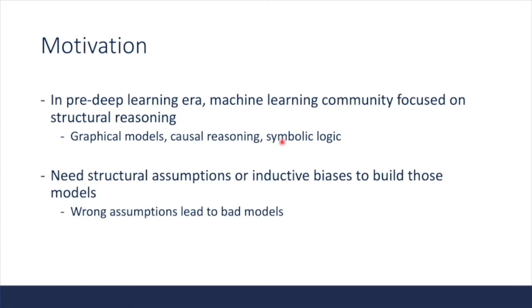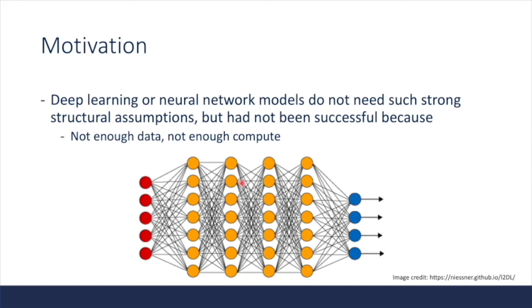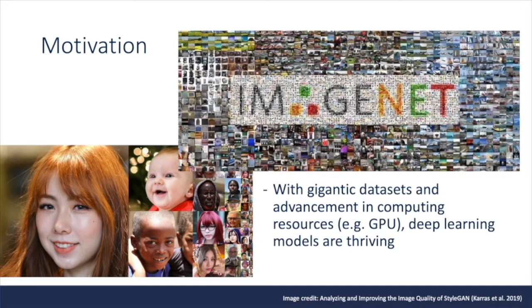Using structural reasoning is data efficient, and it was not easy to make use of big data. One thing to note is that these techniques require structural assumptions, and wrong assumptions lead to bad models. On the other hand, deep learning or neural network models do not need such strong structural assumptions — we just let them figure out relationship structures from training data. However, they were not successful early on because we didn't have access to large datasets or computing resources. But deep learning models are now thriving on tasks like classification or image generation.